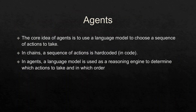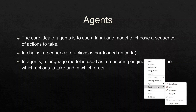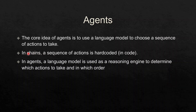The core idea of an agent is to use a language model to choose a sequence of actions to take. In chains, a sequence of actions is hard-coded in code. But in agents, a language model is used as a reasoning engine to determine which actions to take and in which order.